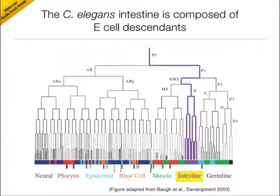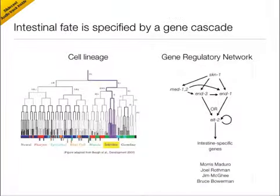The 20 cells that comprise the C. elegans intestine are all descended from the E-cell. The E-cells are instructed to become intestinal cells through the activity of a genetic network consisting of the transcription factors SKN-1, MED1 and 2, END-3, END-1, ending with the expression of the gene ELT-2. ELT-2 is a master regulator that activates hundreds of genes that differentiate the cell into a gut cell, and is activated in an OR-like fashion by END-3 and END-1. This network was elucidated by Morris Maduro and other members of the lab of Joel Rothman at UCSB, and also Jim McGee at University of Calgary.